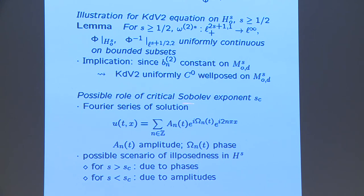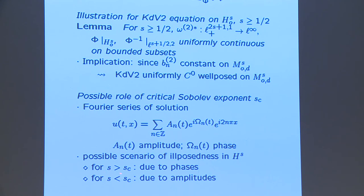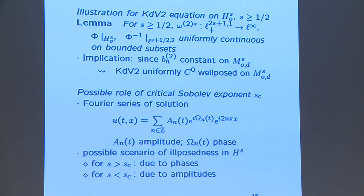Analyzing the flow map in the original Sobolev spaces: the flow map S_t in HS_0 is obtained from the Birkhoff-coordinate flow by conjugation through the Birkhoff map, since Φ is symplectic. For KdV2 on HS with S ≥ 1, omega_2^* is a continuous map from the space of actions into L∞, uniformly continuous on bounded subsets, and since B_n^2 is constant on the leaves with D constant, KdV2 is uniformly C0 well-posed on these sub-manifolds. A possible role of the critical Sobolev exponent s_c: for s < s_c, ill-posedness may be due to blow-up of amplitudes; between s_c and 0, ill-posedness is due to phase blow-up, as in MkdV.